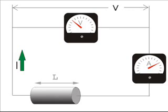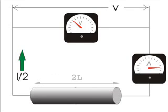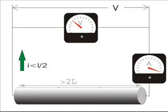Now if we use a conductor of the same cross-section but with length double the previous one — that is 2L meters instead of L meters — we will find that the current becomes half of the previous current, that is I/2. If we further use a lengthier conductor of the same cross-section, we will see the current through it becomes lesser.